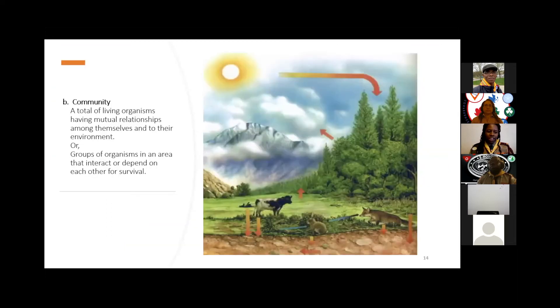Community: a total of living organisms having mutual relationships among themselves and to their environment, or groups of organisms in an area that interact or depend on each other for survival. For example, in this picture of the field ecosystem, we have the plants, the animals, the sun, rain, all playing a part in ensuring the organism's survival by relying and interacting with each other.